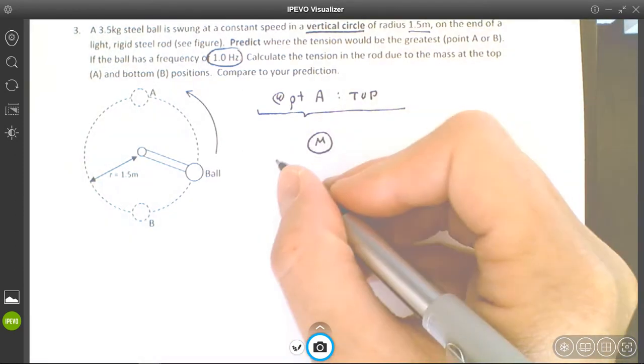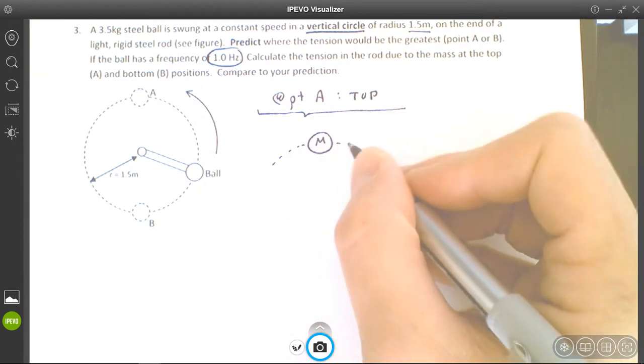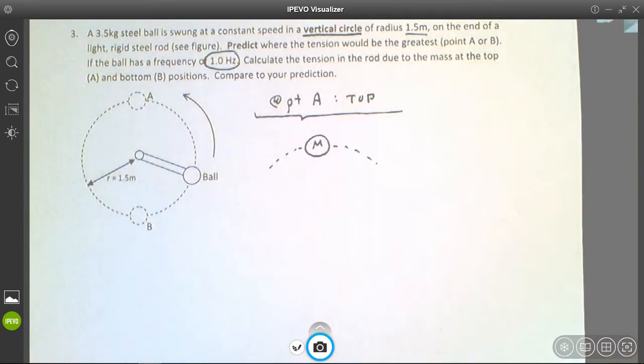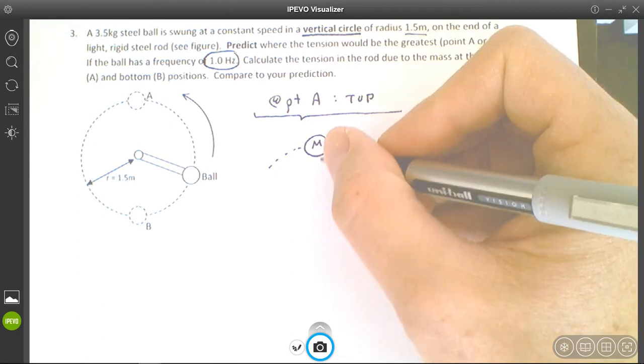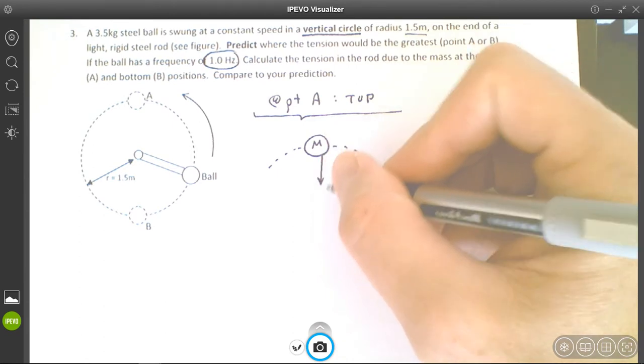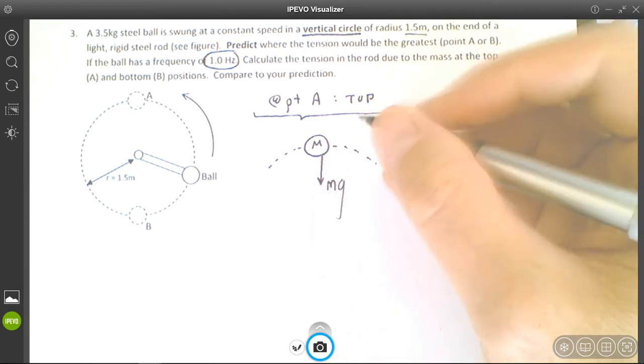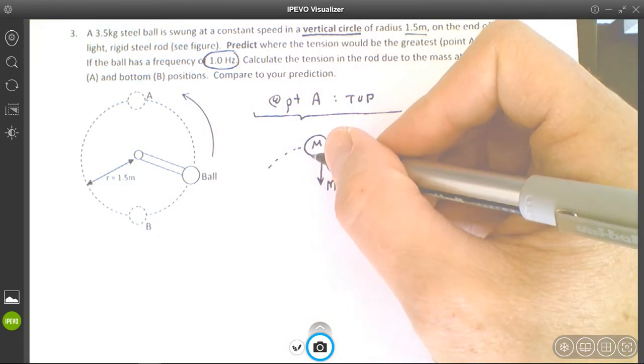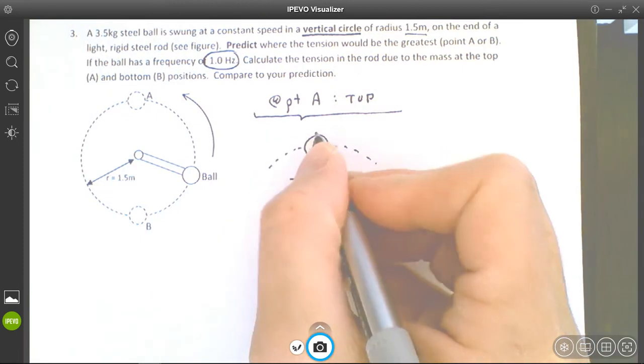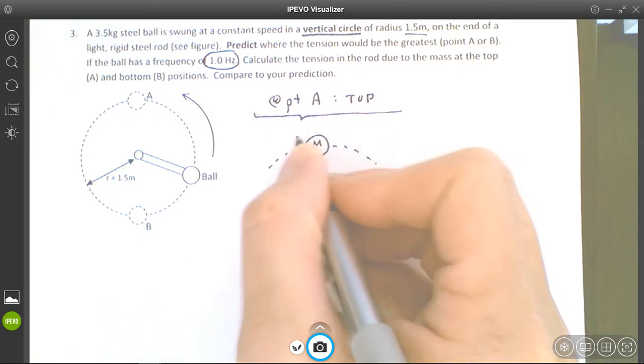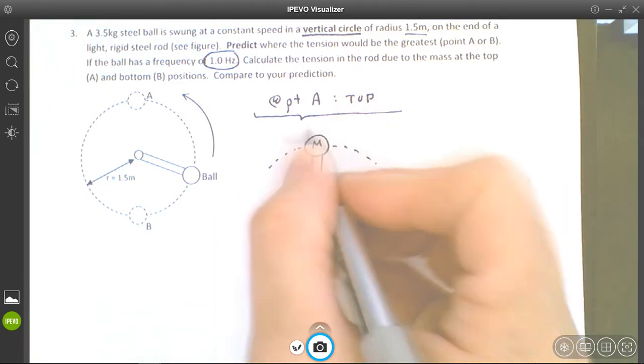We've got the mass at the top. This is centripetal acceleration, so it's definitely a circle situation. What are the forces acting on it? Well, we know that gravity is pulling down on this object, and we know that the rod is pulling inward on the object. It's tangentially rotating in this direction, so the tangential speed is in that direction.